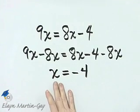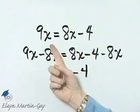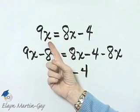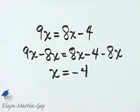So I have my variable x equal to a number, so I'm saying negative 4 is the solution. How can you check? Go back to the original equation. Everywhere you see x, replace x with negative 4, and make sure a true statement results. It will, the solution is negative 4.